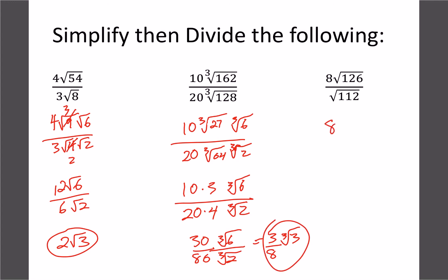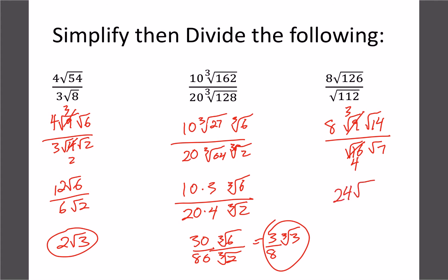Our last square root example: root 126 over root 112. Breaking down: 126 is 9 and 14, and 112 is 16 and 7. Root 9 is 3, root 16 is 4, so we get 8 times 3 = 24 root 14 on top, and 4 root 7 on the bottom. Dividing: 24 over 4 is 6, and root 14 divided by root 7 is root 2. Final answer: 6 root 2.